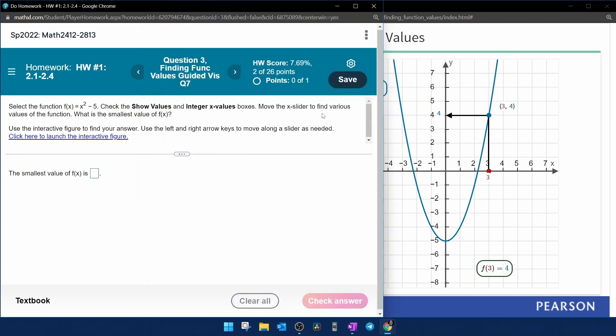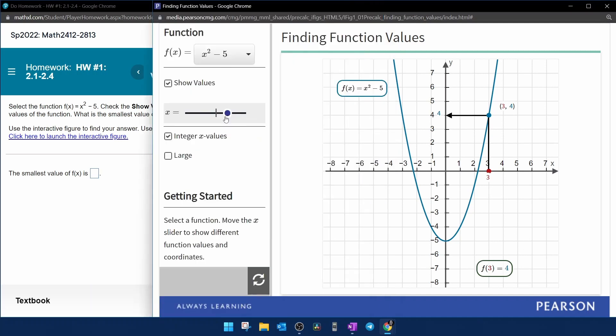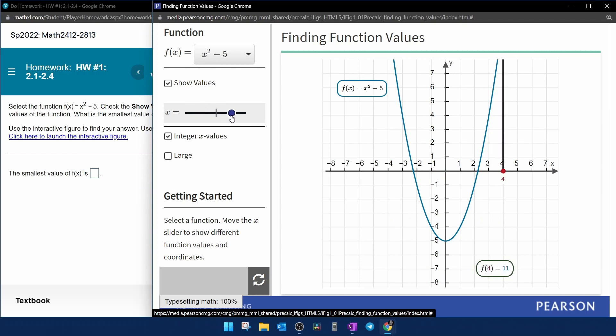And then it says move the x slider to find various values of the function. What is the smallest value of f(x)? So here's our slider. We're going to move that back and forth until we find the smallest value of f(x). Remember f(x) means y. So we're looking for the point on the graph with the smallest y value.